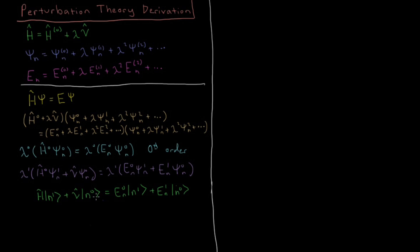So the next thing we want to do is left multiply by psi star 0. So that's going to look like n0, H, n1 plus n0, V, n0 equals n0, E0 n, n1 plus n0, E1 n, n0.